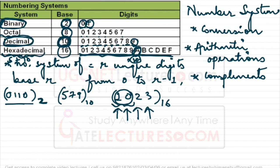We need 16 unique symbols, so we take 10 digits and 6 alphabets. A represents 10, B represents 11, C represents 12, D is 13, E is 14, and F represents 15. So the system has 16 unique digits ranging from 0 to 15, with 15 represented as F.